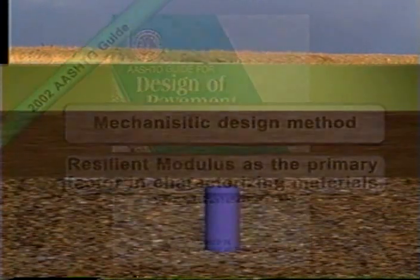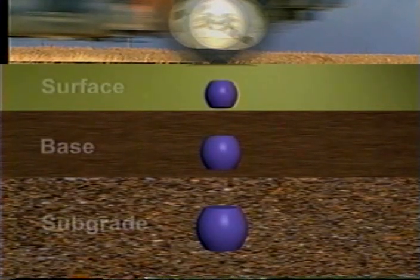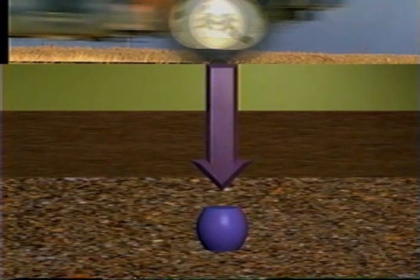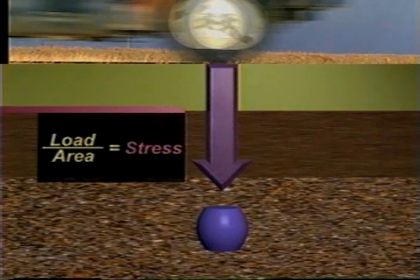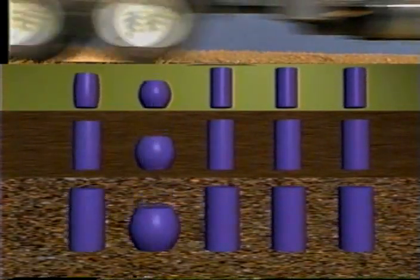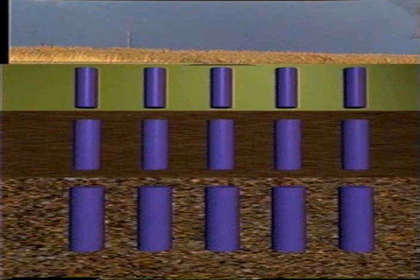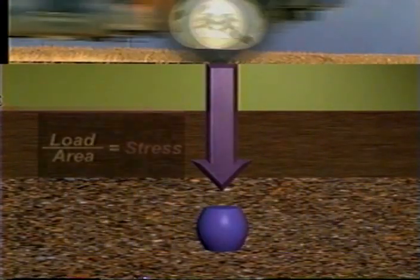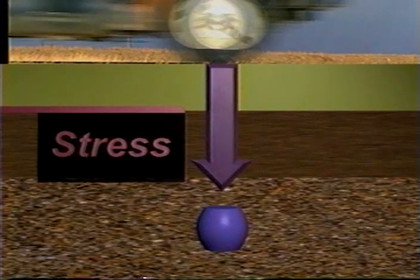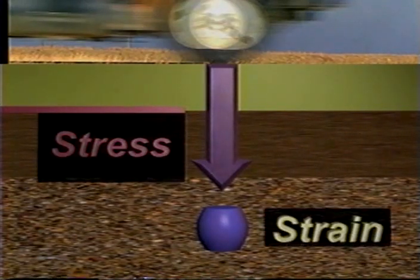We can explain the relevance of resilient modulus to pavement design with this animation. Each axle briefly loads all the materials under it. The loading is referred to as stress. As the vehicle moves, stress is transferred to other areas. In response to the stress, the material exhibits distortion, called strain, and then the material rebounds.